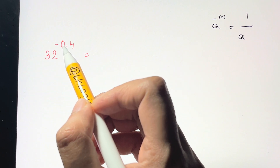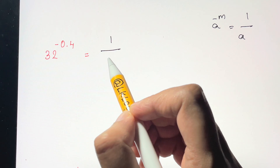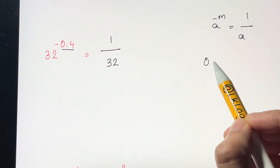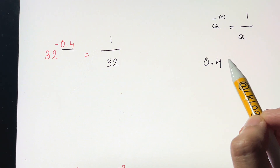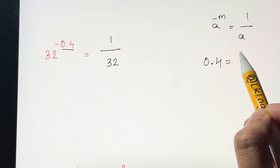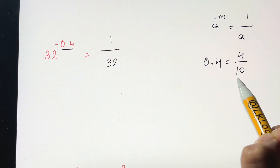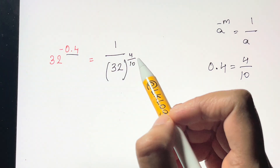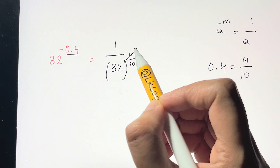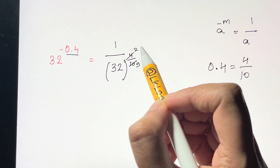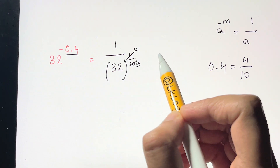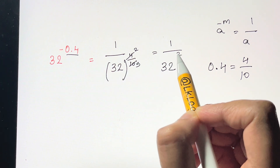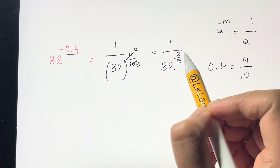Since we have a negative exponent, we first take the reciprocal, giving us 1 over 32. Now 0.4 is a fraction — you can write it as 4/10. Simplifying: 2 times 2 is 4, 2 times 5 is 10, so we get the fractional exponent 2/5. We now have 1 over 32 to the power of 2/5.